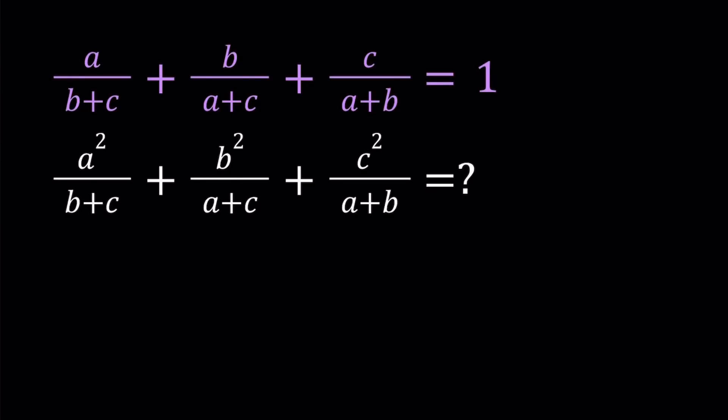Hello everyone. In this video we're going to be simplifying a rational expression. This problem was suggested by one of my viewers, but I can't remember who suggested it, so if you are the one, please let me know and write a comment. I've also seen this problem in a couple of different books written in Russian. So we're given that a/(b+c) + b/(a+c) + c/(a+b) = 1, and we're supposed to evaluate a²/(b+c) + b²/(a+c) + c²/(a+b). None of the denominators should be 0, so a+b, a+c, and b+c should all be nonzero.